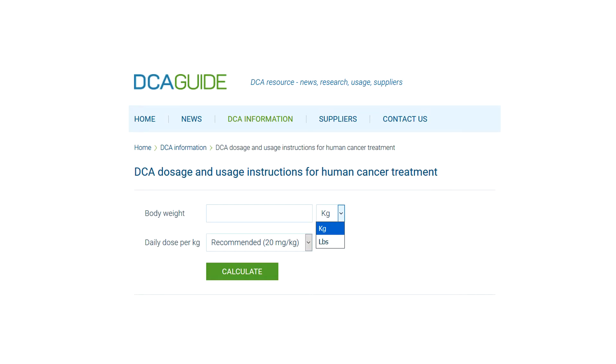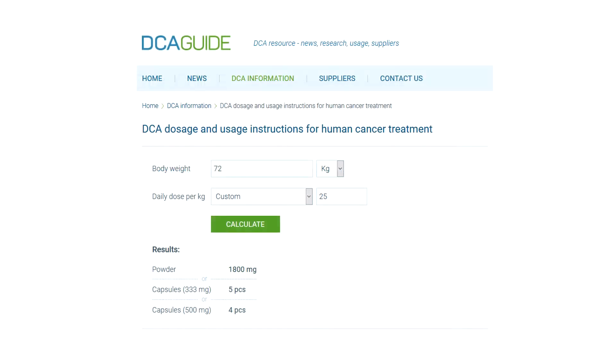Another easier alternative would be to visit dcaguide.org and use the online calculator. Just enter your body weight in kilograms or pounds, pick the daily dose you wish to consume and press calculate. Your results will appear in milligrams of powder or different size capsules you need to use daily. Divide this by two and you'll know your morning and evening dose.